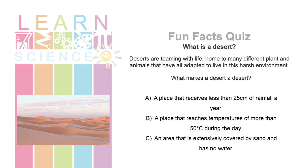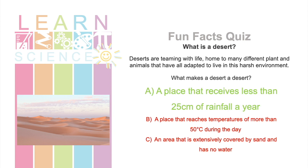But what classifies a certain environment as a desert? What makes a desert a desert? Is it A, a place that receives less than 25 centimetres of rainfall a year? B, a place that reaches temperatures of more than 50 degrees C during the day? Or C, an area that is extensively covered by sand and has no water? That's right, the answer is A. For an area to be considered a desert, it must receive less than 25 centimetres of rainfall a year.